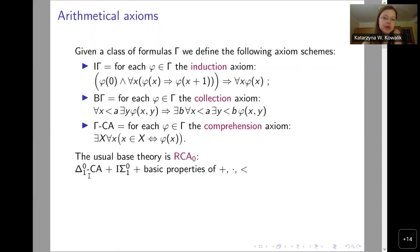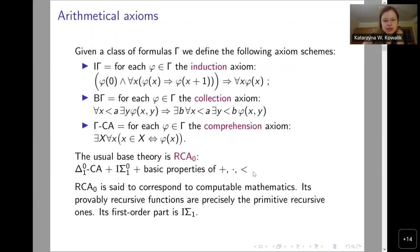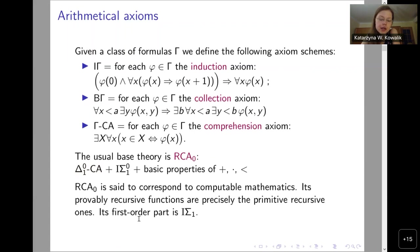The usual base theory for reverse mathematics is RCA0, which consists of comprehension axiom for Δ⁰_1 formulas. Δ⁰_1 are those formulas which are Σ¹_1 and equivalent to some Π⁰_1 — these are computable properties. RCA0 also includes Σ⁰_1 induction and some basic properties of operations and order on natural numbers. RCA0 is said to correspond to computable mathematics because this Δ⁰_1 comprehension basically says that computable sets exist.